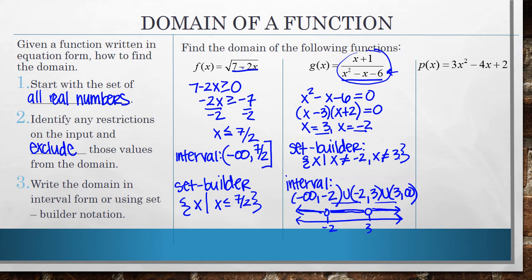So there are no values that I have to exclude. I can put in any value for x and I'm going to actually get an output value. So in this case, our domain is the set of all real numbers. We can write that using set builder notation as x such that x is an element or is any real number. Or you can write that in interval notation as any number from negative infinity to infinity.